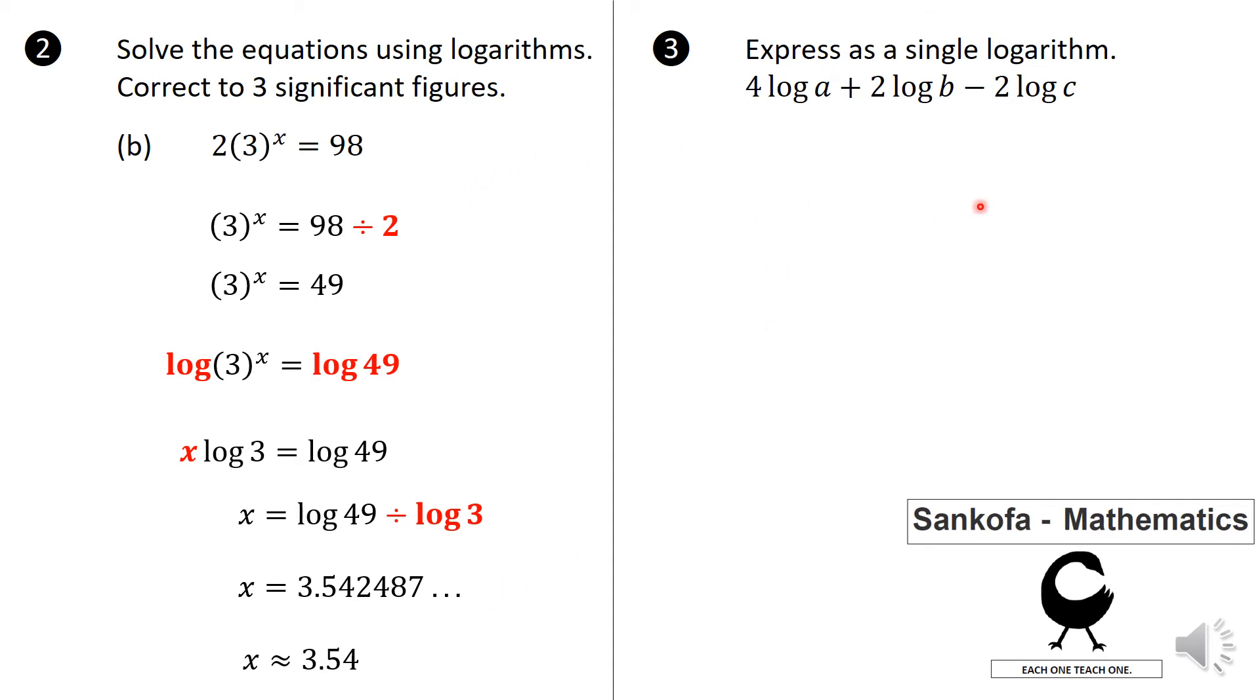For this particular expression here, you're supposed to write them as a single log. So basically, first thing is first, you see you are adding logs here, and then you're subtracting by that. So when you add log of the same basis, you are going to multiply the numbers. And when you subtract log of the same basis, you're going to divide. So the first thing is first, I'm going to use the power law and just reverse it, and that becomes a to the power 4, and b squared, and c squared. Now, I'm going to take the a to the power 4, and the b to the power 2, and I'm going to multiply them together.